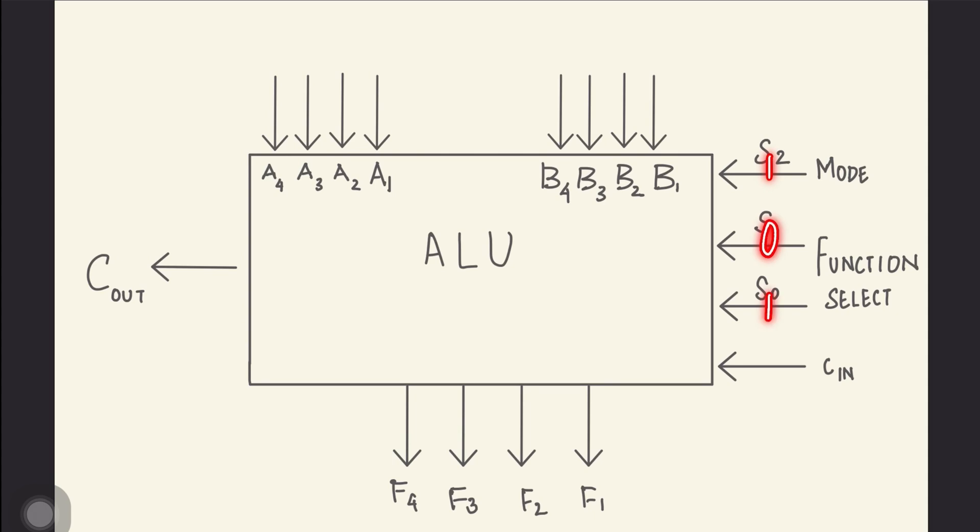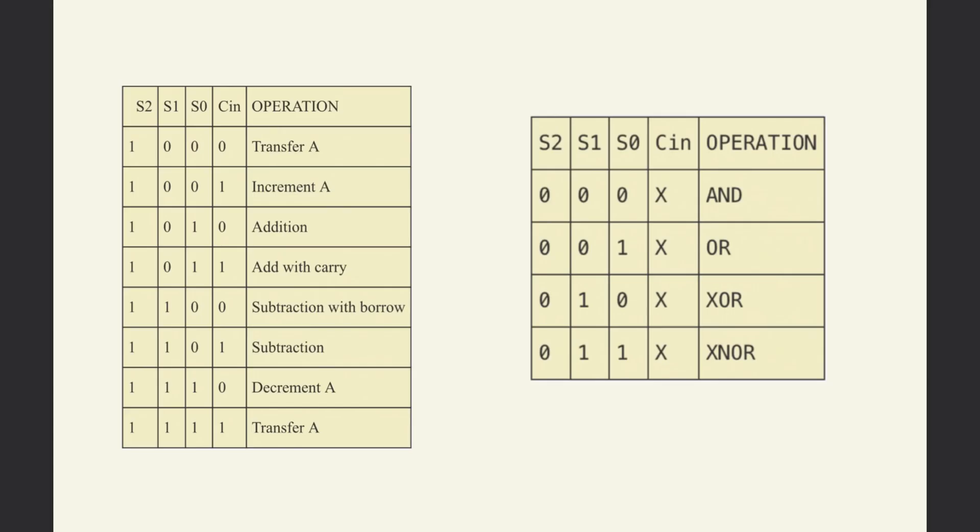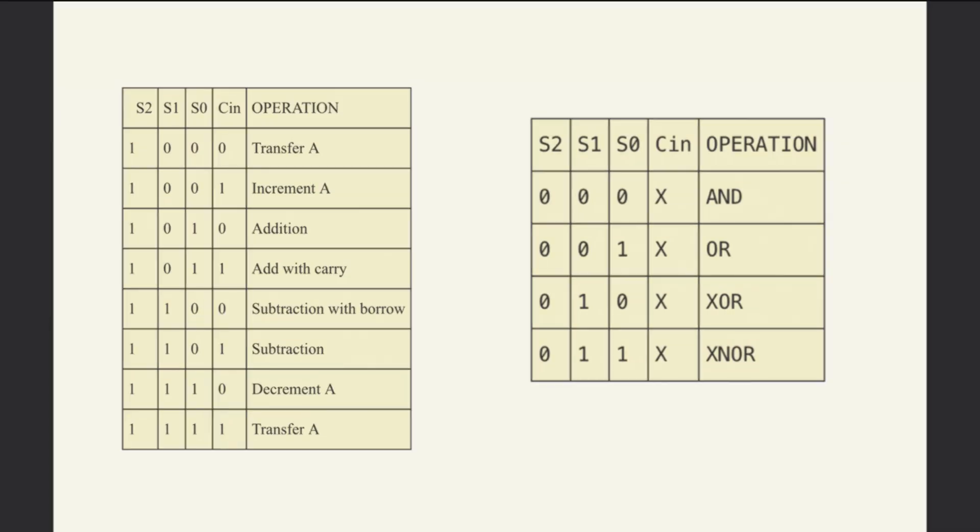The input carry is quite often used as a fourth selection variable to double the number of arithmetic operations that can be performed. In this way, it is possible to generate 4 more operations for a total of 8 arithmetic operations and 4 logic operations.